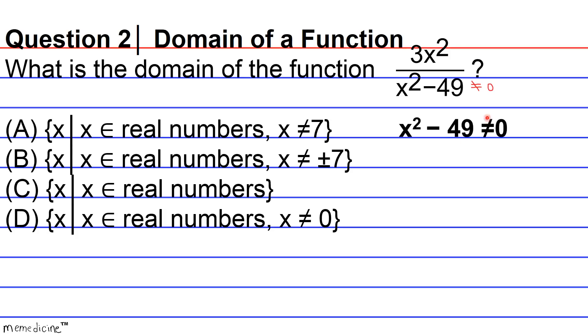So you can treat the not equal sign just like a regular equal sign. So we're going to add 49 on both sides of the not equal sign, and we get that x squared is not equal to 49. And then, in order to figure out what the x values of interest are, we have to take the square root of both sides.